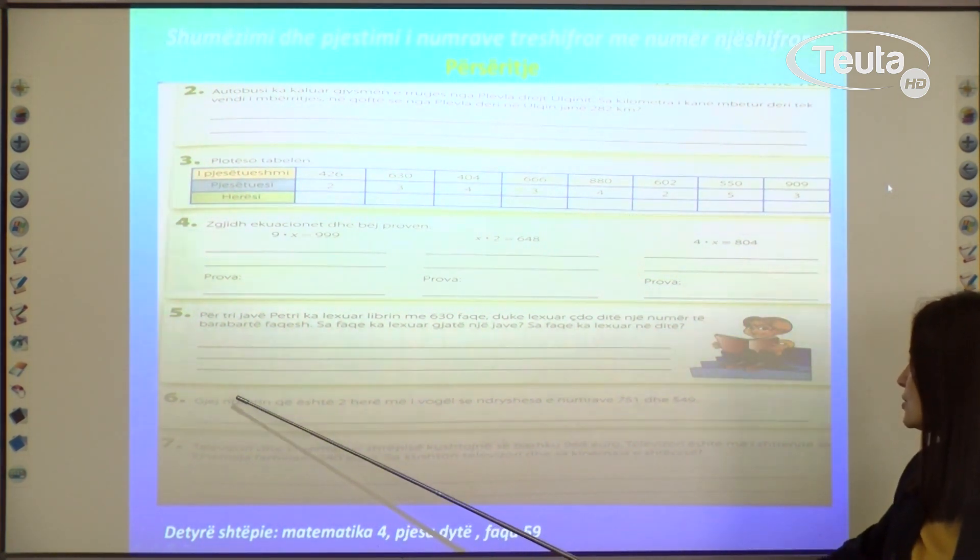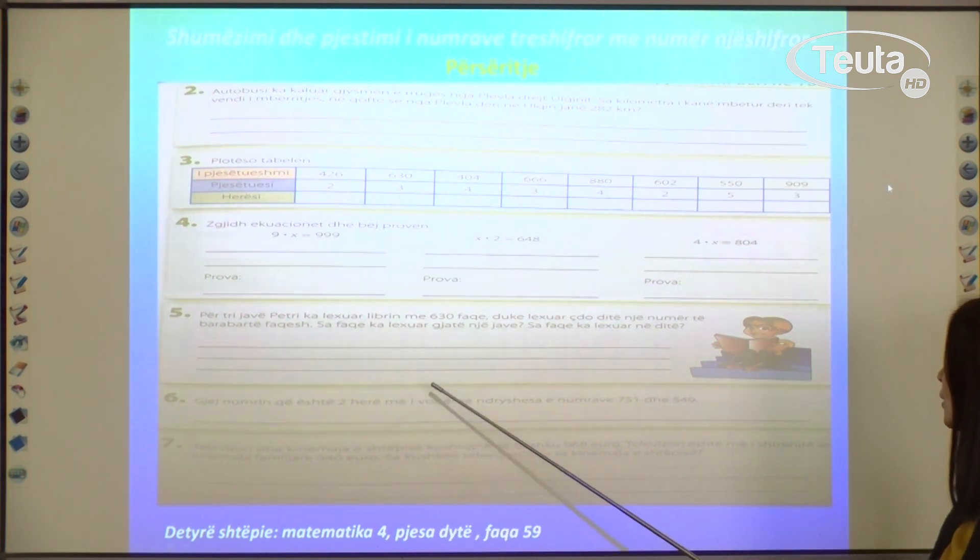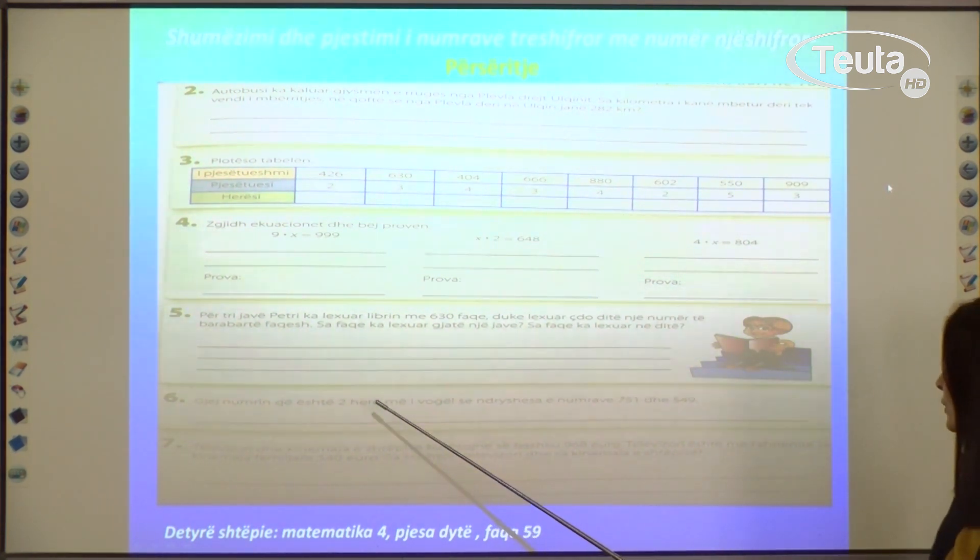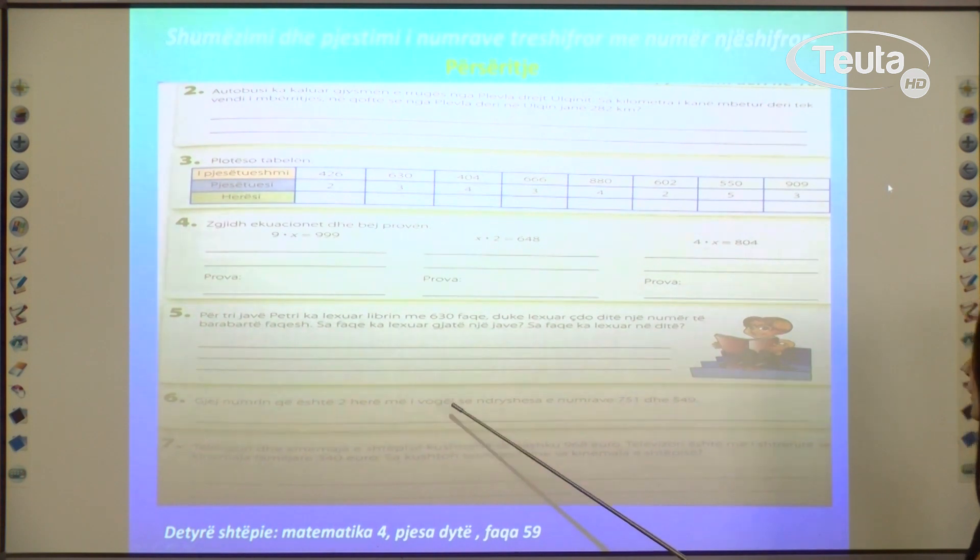Next exercise: Find the number that is two times smaller than the difference of the numbers 751 and 549. In this case, think when it says two times smaller, in this case we have division. So what do we do? First we use parentheses, we put the difference of 751 and 549 in parentheses, and divide by 2 to find the number that is two times smaller than the difference of these two numbers.